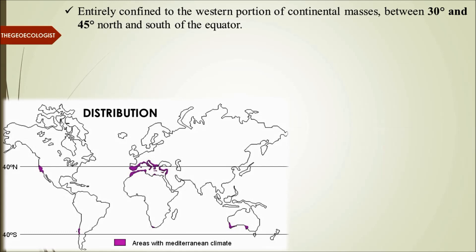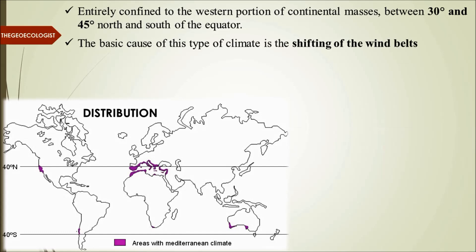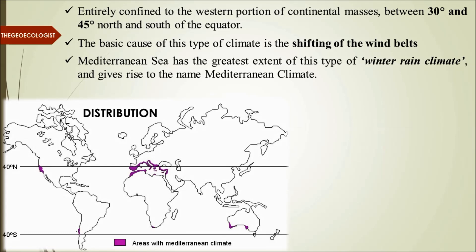The basic cause of this type of climate is the shifting of wind belts. Whenever you hear Mediterranean climate, the wind belt shift in 30 to 45 degrees north of the equator is the main reason for this climatic regime. The name comes from the Mediterranean Sea, and the area adjoining it has the greatest extent of this biome, which is characterized by winter rainfall.